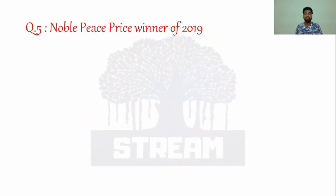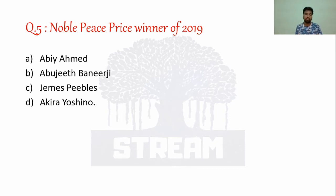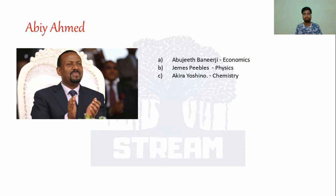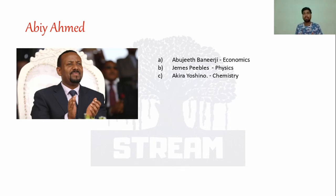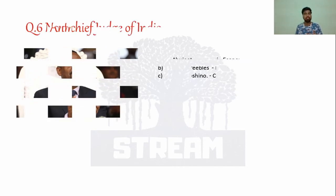Current Affairs Question 5: Nobel Prize winner of 2019 — the Nobel Peace Prize went to Abiy Ahmed, the Prime Minister of Ethiopia. Other 2019 Nobel winners include Abhijit Banerjee (Economics, Indian-origin), James Peebles (Physics, for the black hole theory concept), and Akira Yoshino (Chemistry, for the invention of lithium-ion batteries).